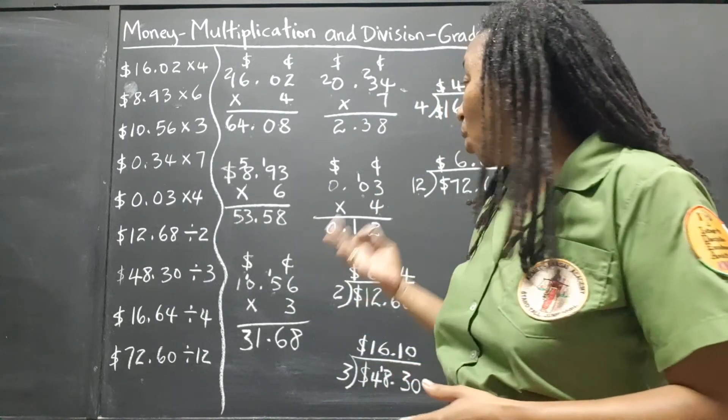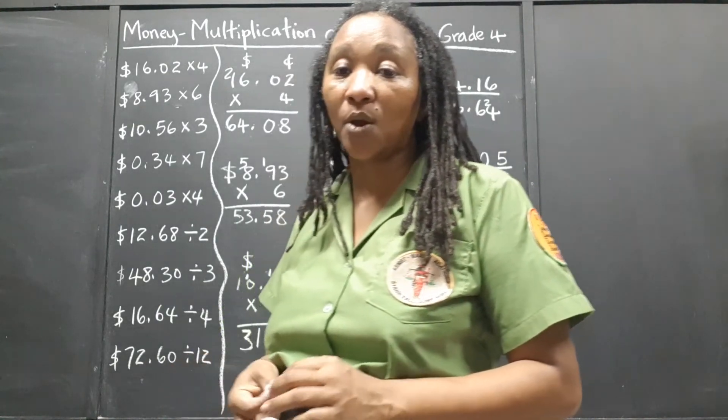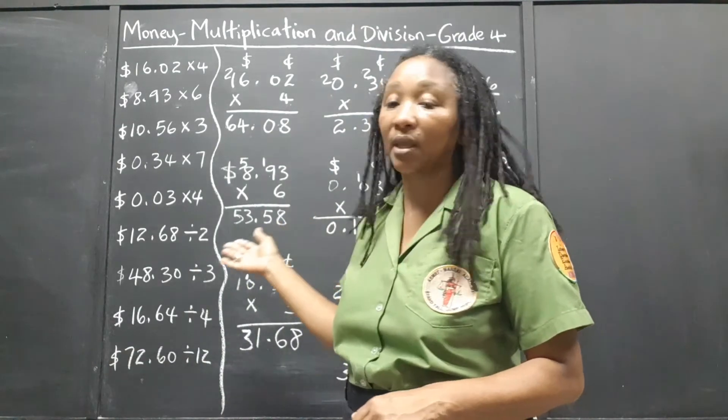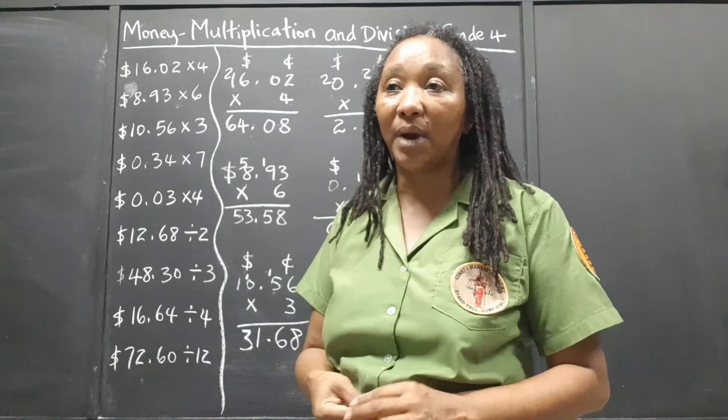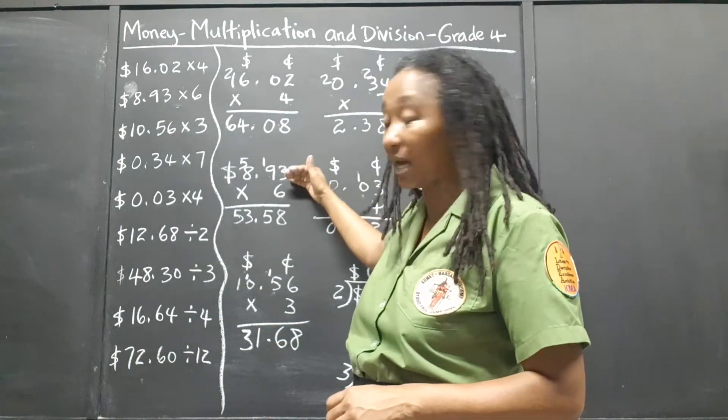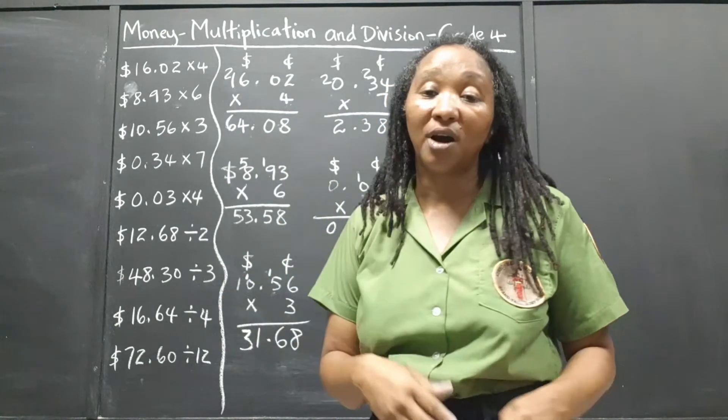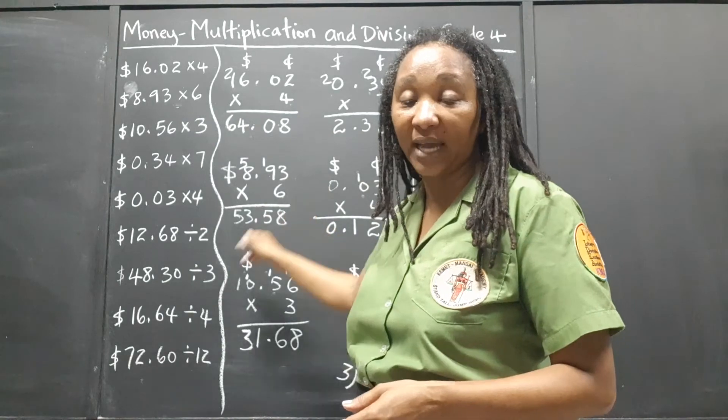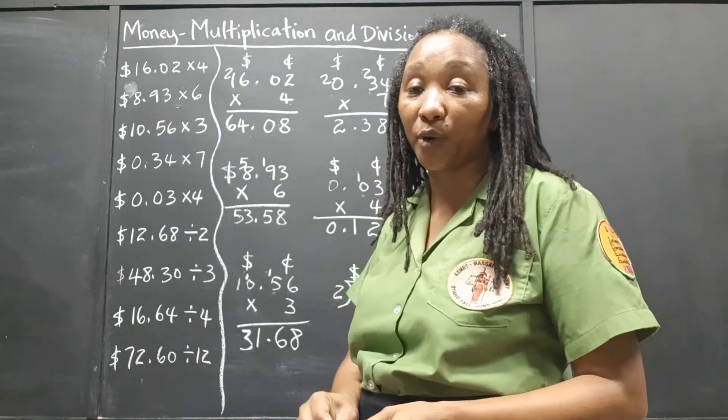For the multiplication part of it, we are working out if we are buying something, if we are buying a certain number of things that cost the same. Any number of those items, we multiply the cost by the number of items to see how much we are going to pay.